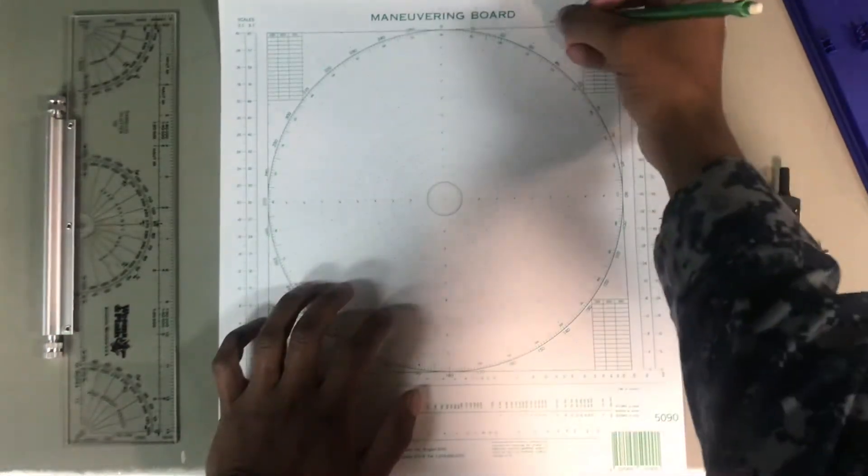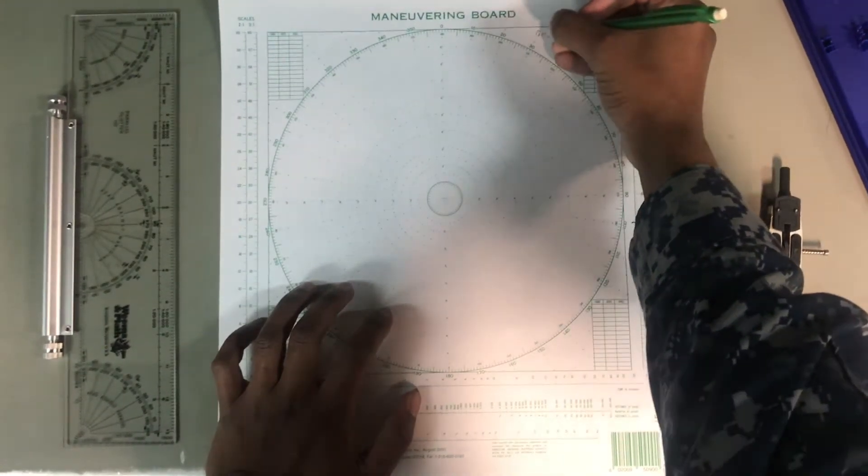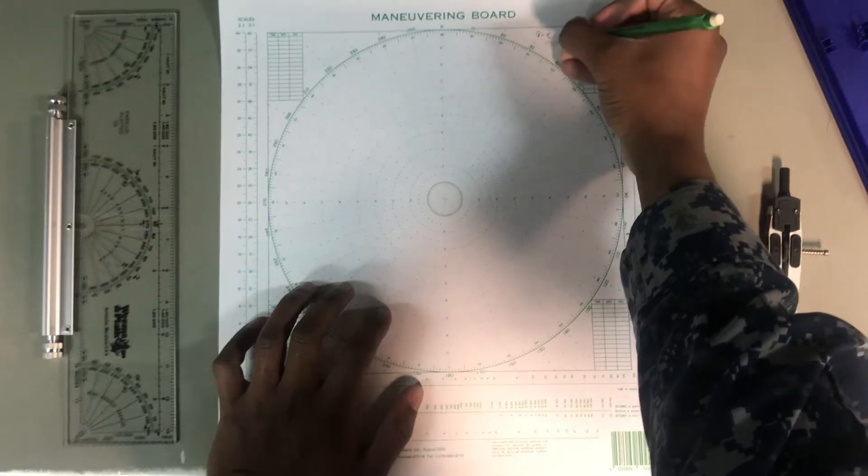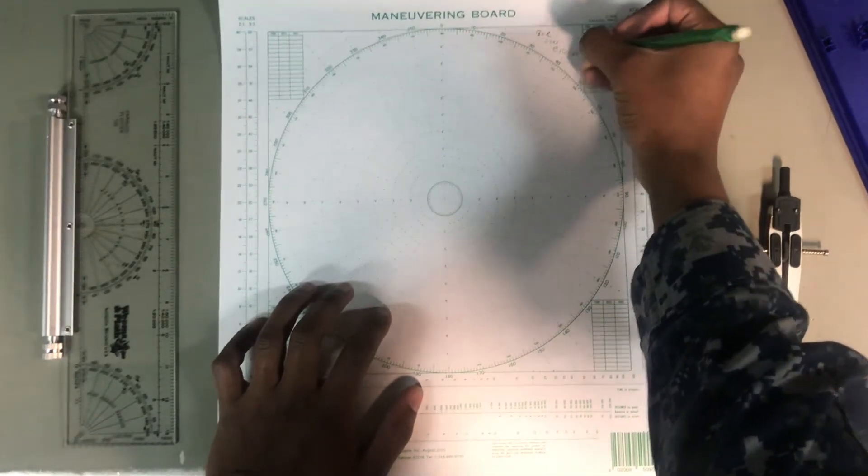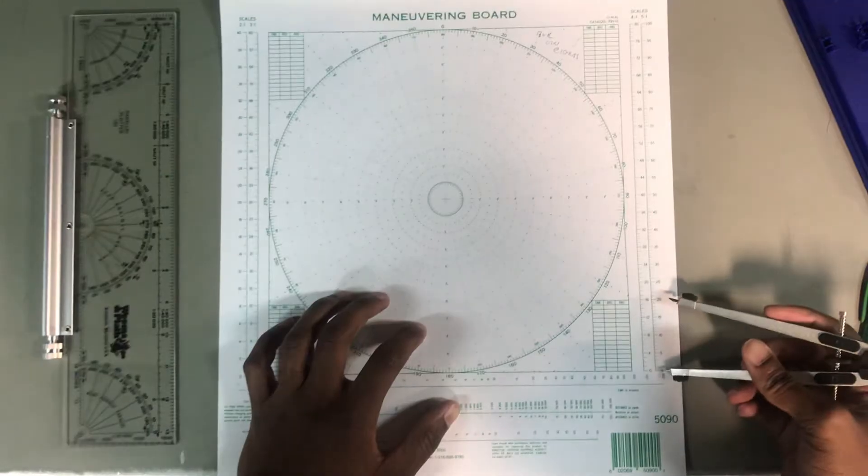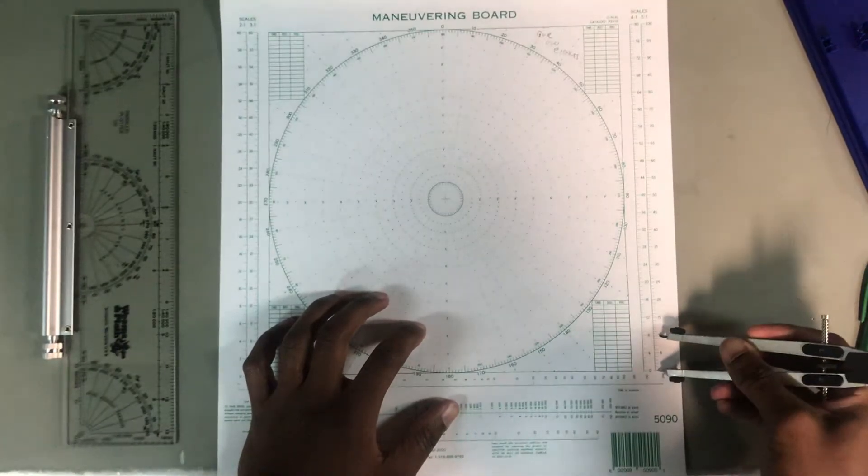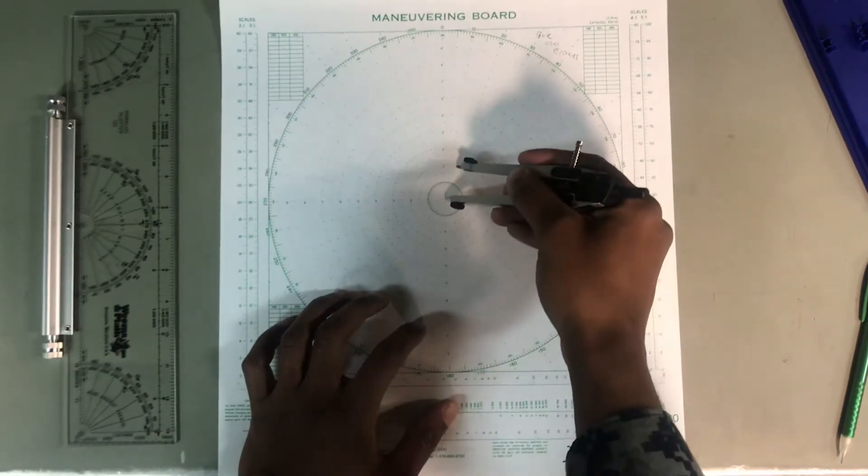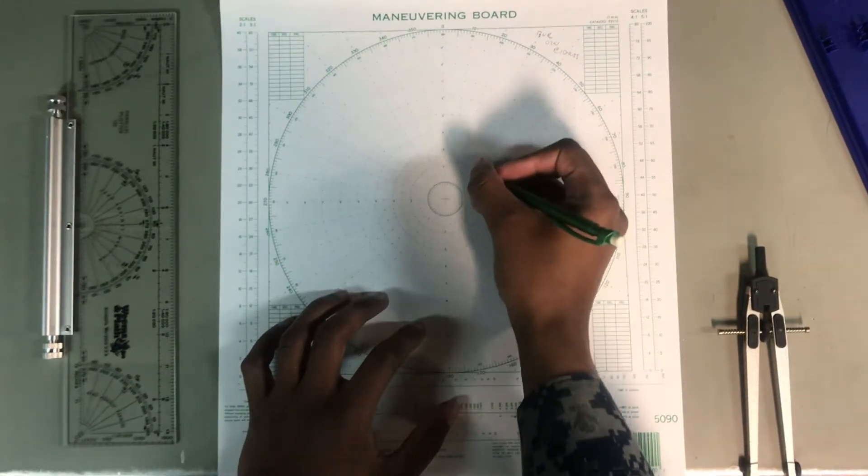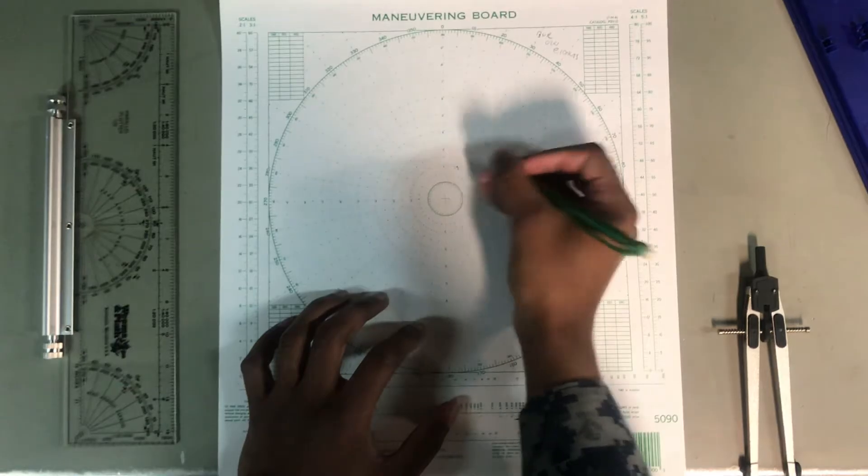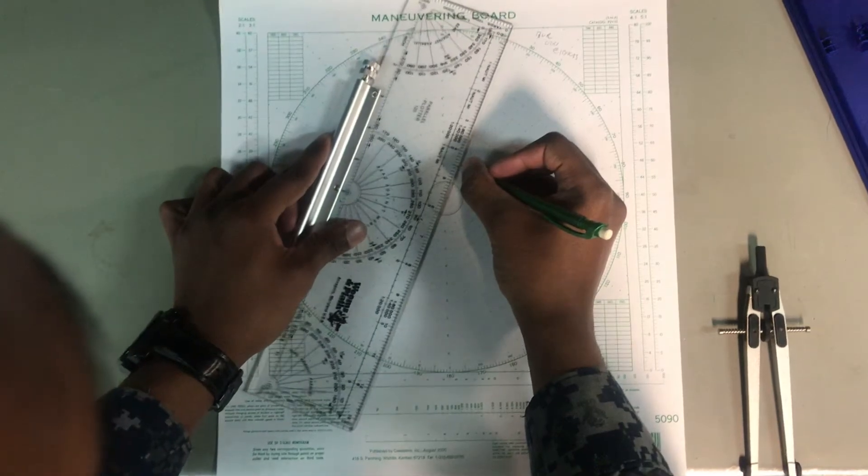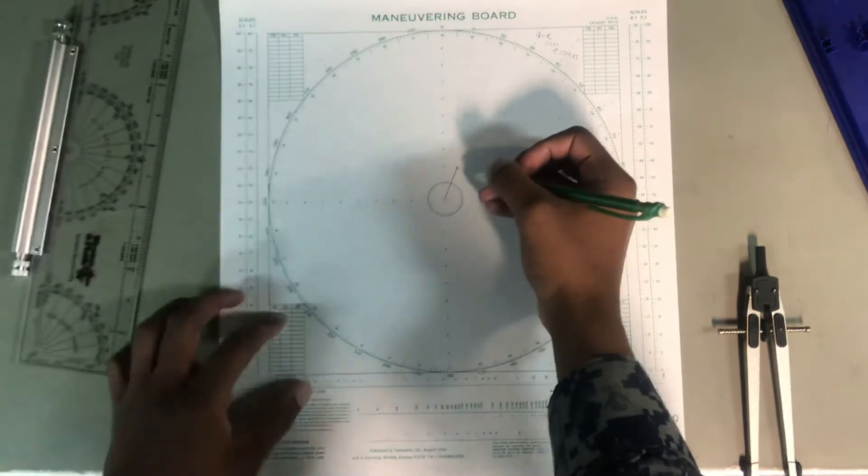Let's say that the Blue Ridge, excuse my handwriting, I write like a doctor even though I'm not one. So, let's say Blue Ridge is on course 0 to 0 at 10 knots. So you take your dividers here and you go ahead and you measure out on your 5 to 1 scale, 10 knots. Put your metal pointer in the center and you make your little dot right there on the 0 to 0 line.